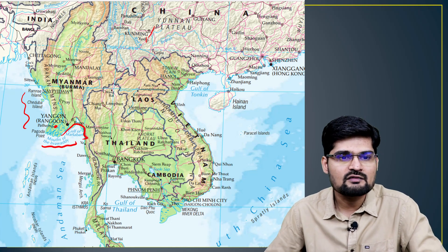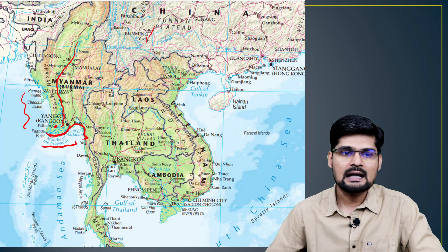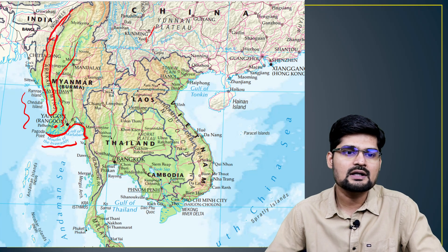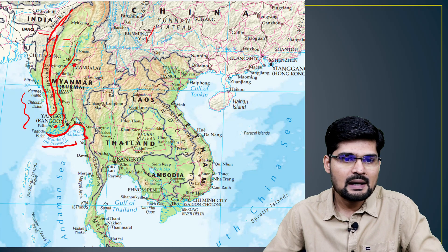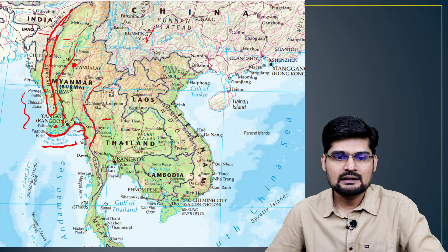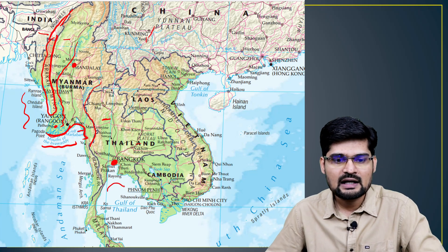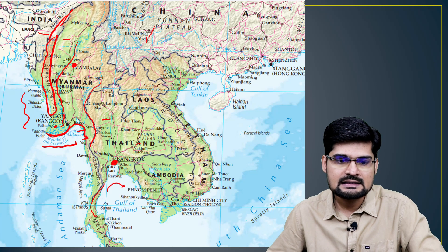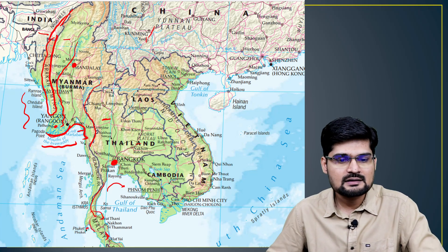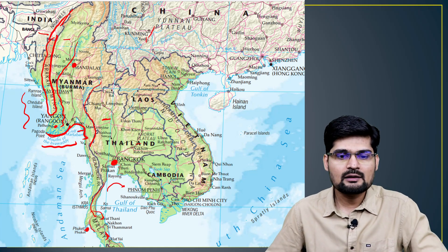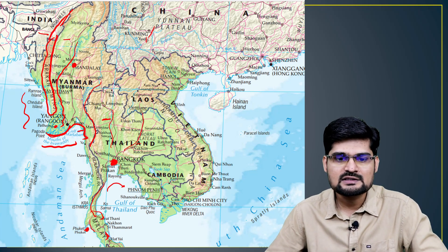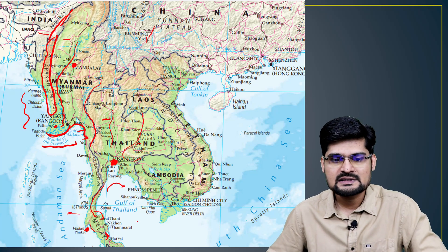Looking at the water bodies and important areas, starting from the western margin: this is Yangon, formerly called Rangoon. Here is the Gulf of Martaban — the mouth of the Irrawaddy River, which passes through the entire country. This is the Irrawaddy delta, and here are the Arakan Yoma mountains forming a boundary between India and Myanmar. Mandalay is another important center. The Salween River acts as a boundary between Thailand and Myanmar. Moving to Thailand, this is the Bangkok region and the Gulf of Thailand. Thailand extends further connecting the Malay Peninsula, and here is Phuket — a very important tourist center. Bangkok is the major center, drained by several rivers.